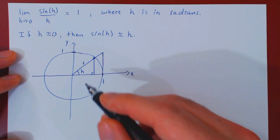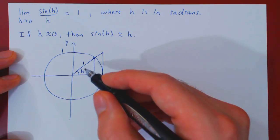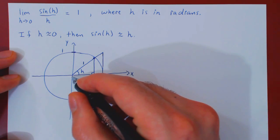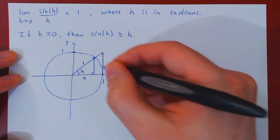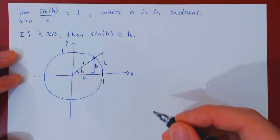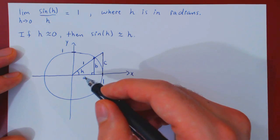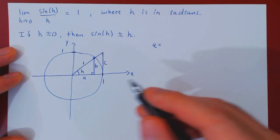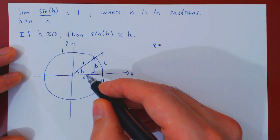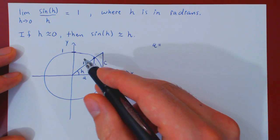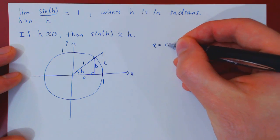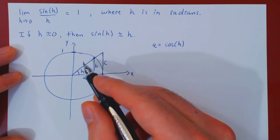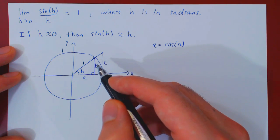We also construct a larger triangle by extending the hypotenuse until we can draw a perpendicular down to the point where x is 1 and y is 0. We have two triangles; let's find the base and height of each in terms of h using labels a, b, and c. Call the base of the small triangle a and the height b. By definition, cos of h is adjacent over hypotenuse, so a over 1 equals a, therefore a is cos of h. Sine of h is opposite over hypotenuse, so b over 1 equals b, therefore b is sine of h.